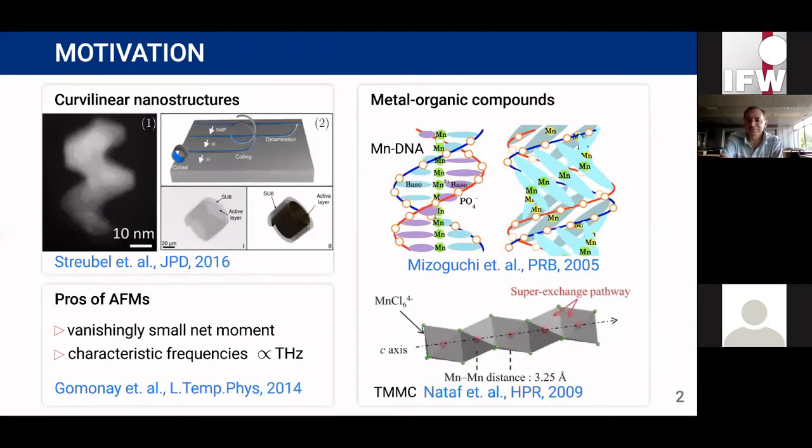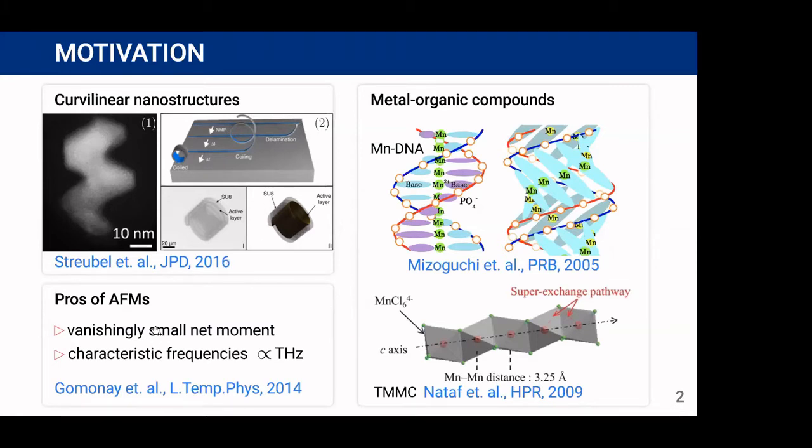Our study is motivated by the crucial advances in nanotechnology which allows creation of nano-sized magnetic objects with complex geometry like magnetic nano-sized wires and structural elements of stretchable and flexible magnetic electronics. Practical applications for fabrication of such objects use antiferromagnets which have several advantages over ferromagnets.